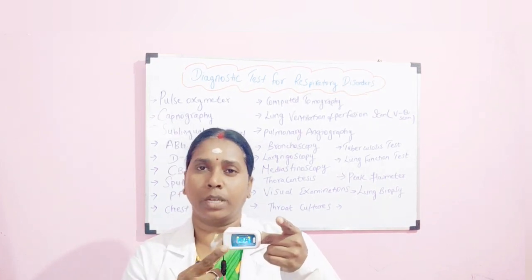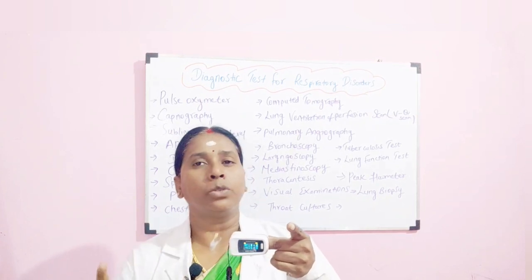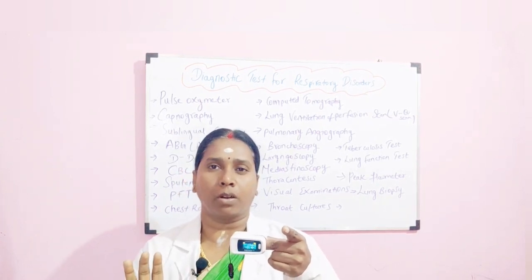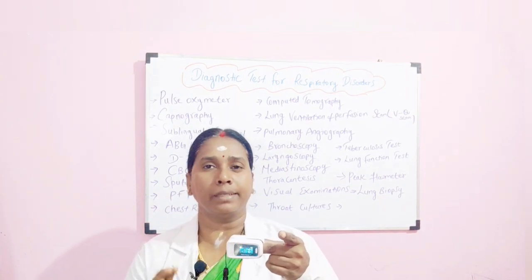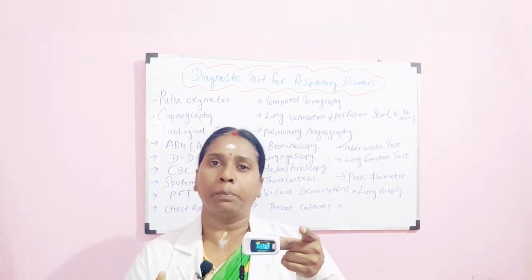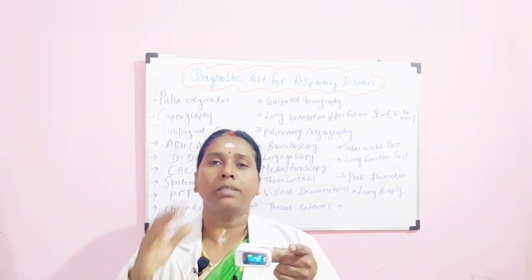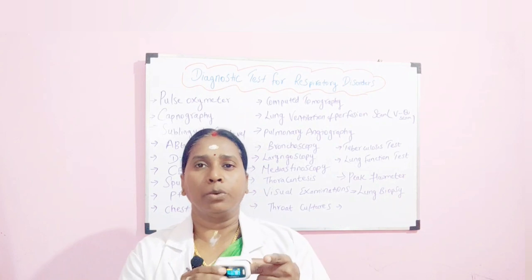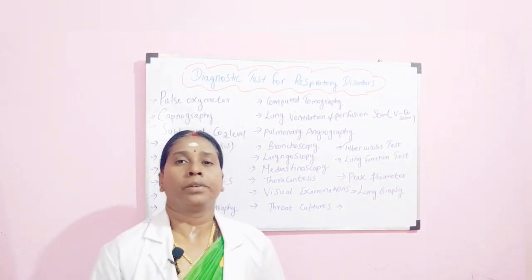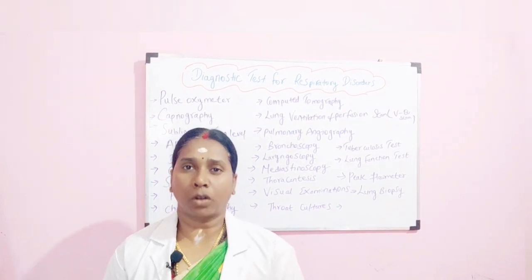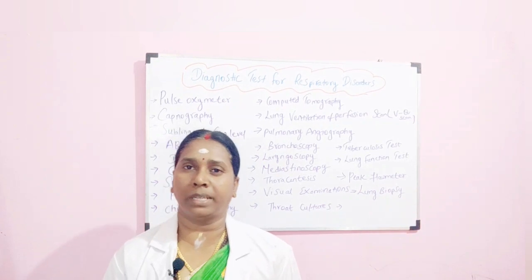The oxygen saturation level from 90 to 100 is considered normal. When it goes below 90, it is considered an abnormal reading. The pulse from 70 to 80 is also considered normal. These are the two things you will be assessing with your pulse oximeter probe to rule out hypoxemia.